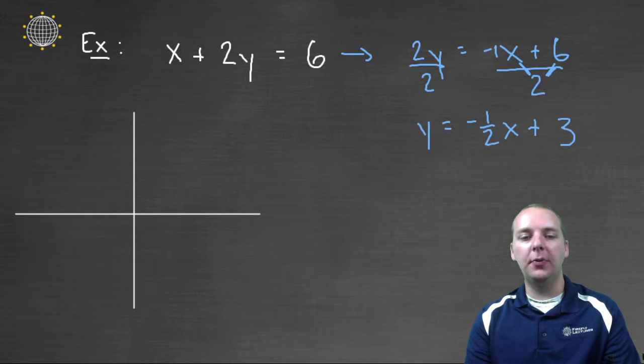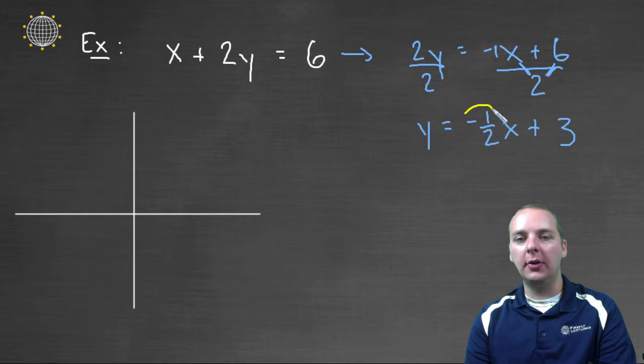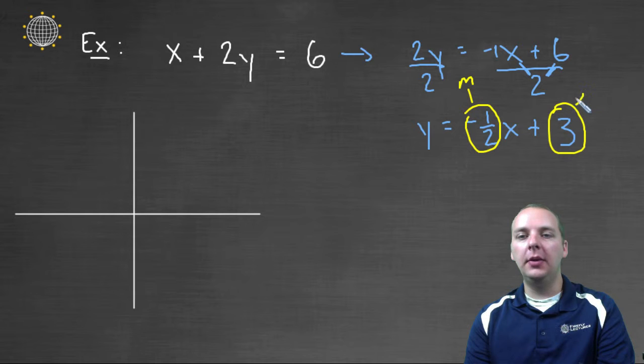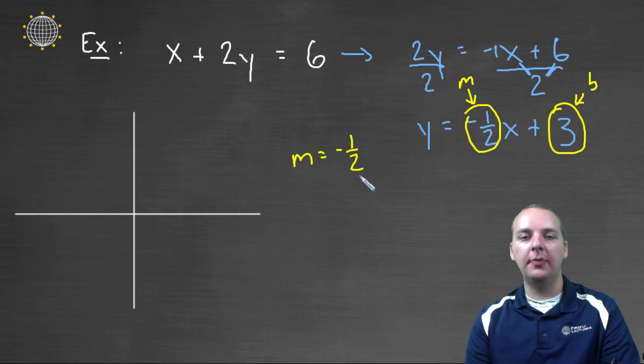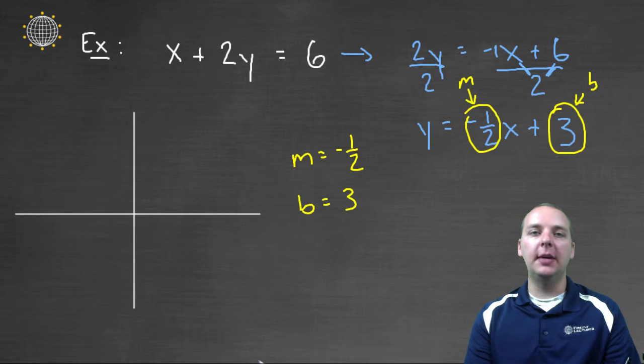This is in slope intercept form, and so now I can talk to you about the m, the slope, and the b, which is the y intercept. So the m for this linear equation is negative one-half, and the b is positive three. Three is the y intercept, negative one-half is the slope. So let's go back to the steps again.